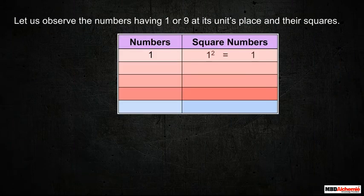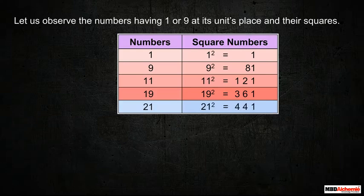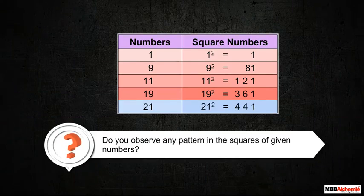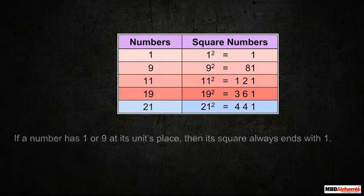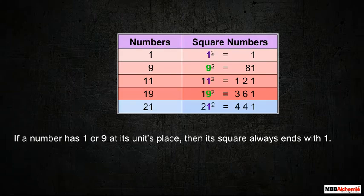Let us observe the numbers having 1 or 9 at their unit's place and their squares. Do you observe any pattern in the squares of given numbers? If a number has 1 or 9 at its unit's place, then its square always ends with 1.